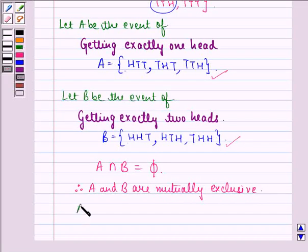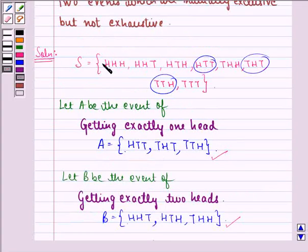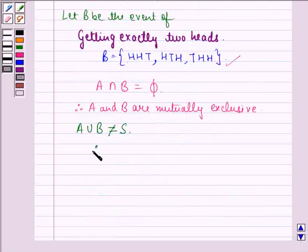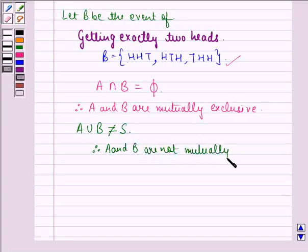Now, we consider A union B. We see that A union B does not give us the entire sample space. Since A union B is not equal to the sample space, therefore A and B are not mutually exhaustive.